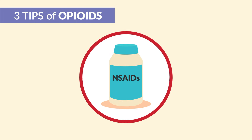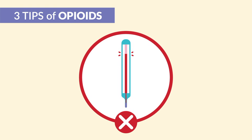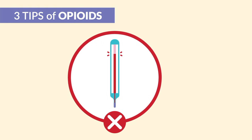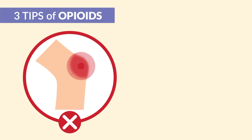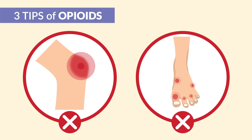Also, opioids are not NSAIDs, so there are no antipyretic properties — they're not going to reduce a fever. And there are no anti-inflammatory properties, so opioids are not directly good for gout or rheumatoid arthritis.